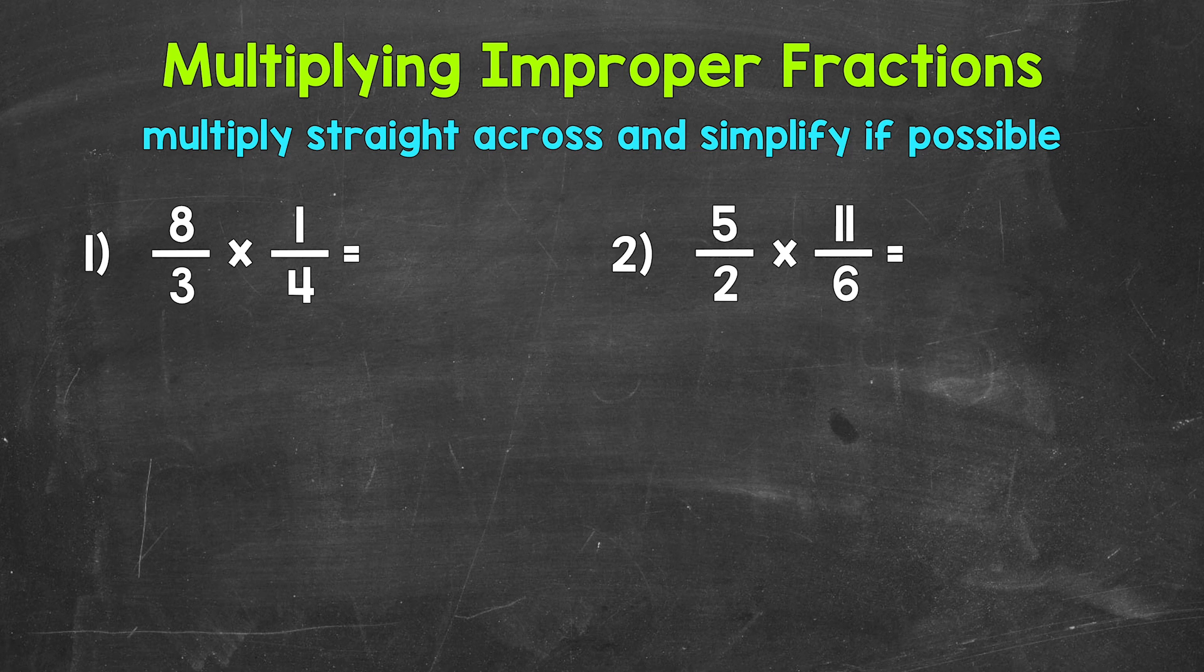Improper fractions just have a value greater than one whole. If we're given a problem involving any improper fractions, that doesn't change the way we multiply. Let's jump into our examples, starting with number 1, where we have 8 thirds times 1 fourth.